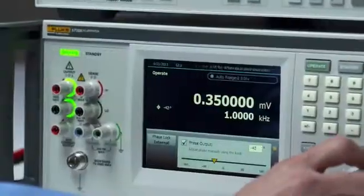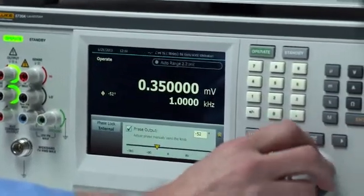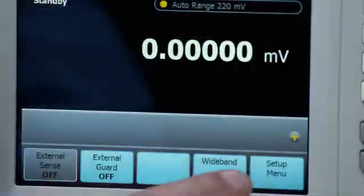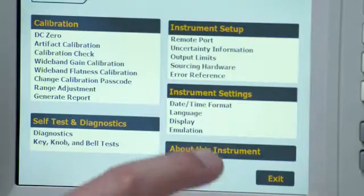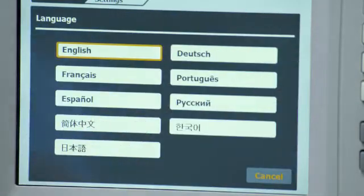The new front panel design combines the familiar keypad of the 5720A with the new 6.5-inch full-color capacitive touchscreen display. Now you can easily see functional outputs, calibration settings, and calibrator status in your choice of nine languages.